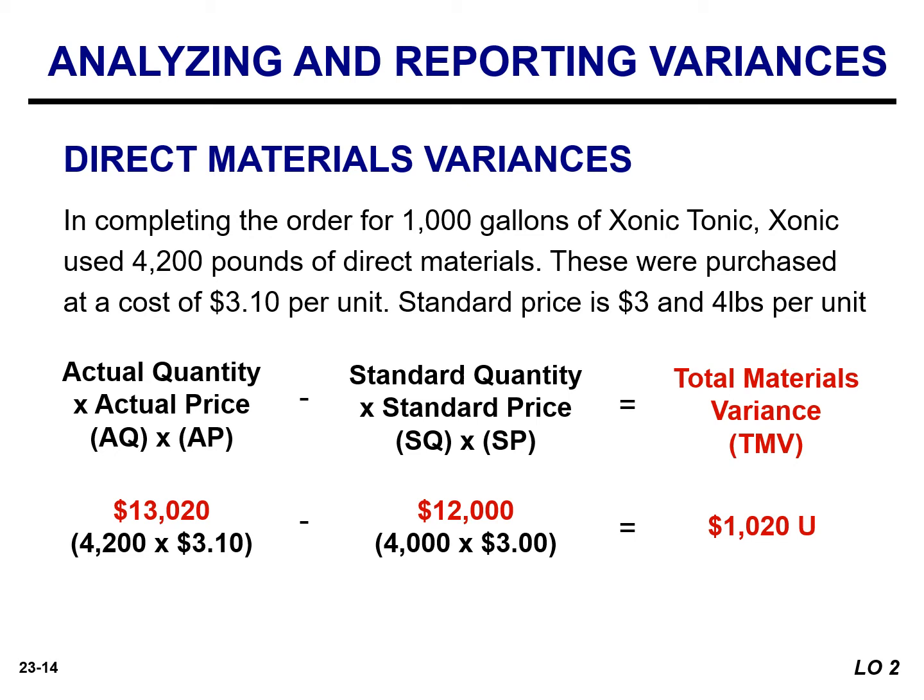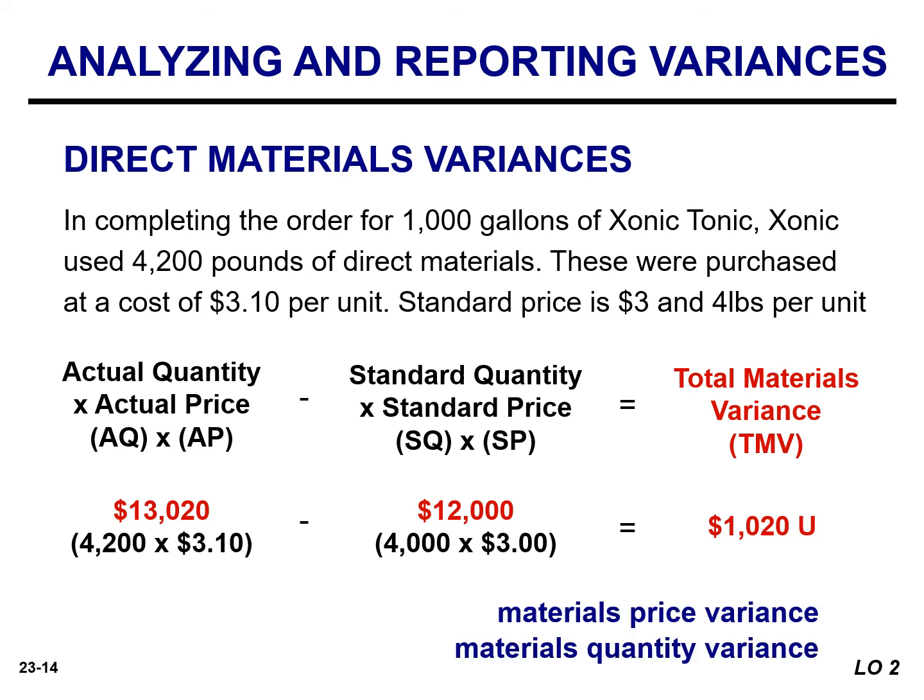The total materials variance could be caused by a difference in the price paid for the materials, or by differences in the amount of materials used. We can explain this unfavorable variance of $1,020 by calculating a material price variance and a material quantity variance.